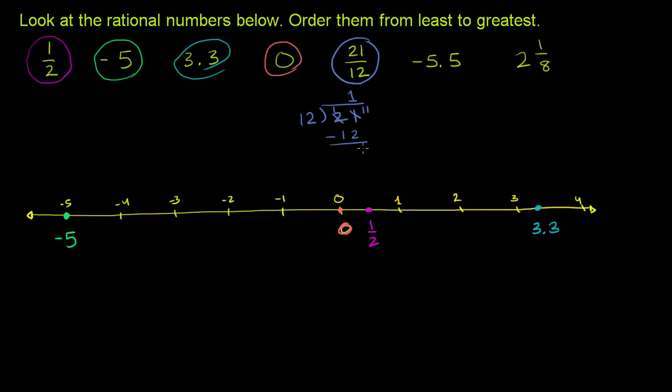Anyway, 11 minus 2 is 9. 1 minus 1 is 0. So we have a remainder of 9. So this thing written as a mixed number, 21 over 12 written as a mixed number, is 1 and 9 twelfths. You get 1 12 twelfths in there, and then you get 9 twelfths left over.